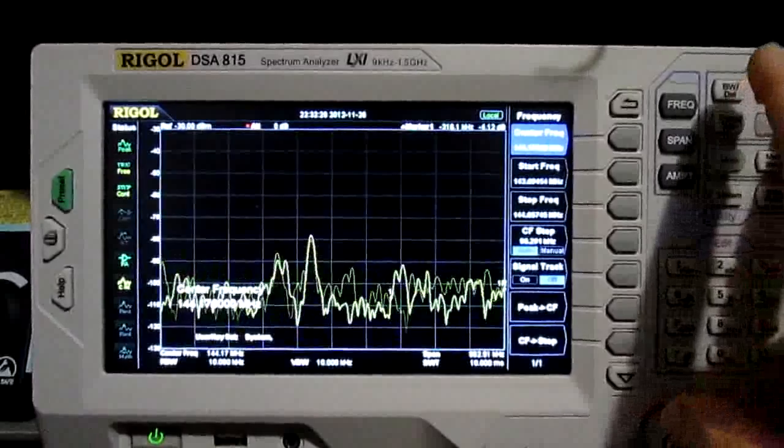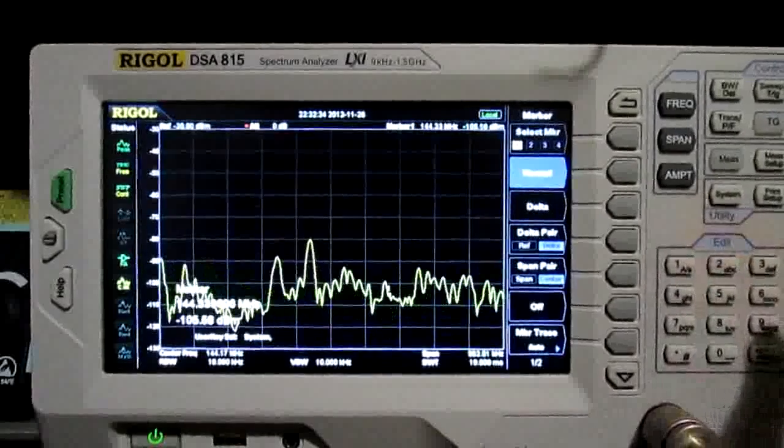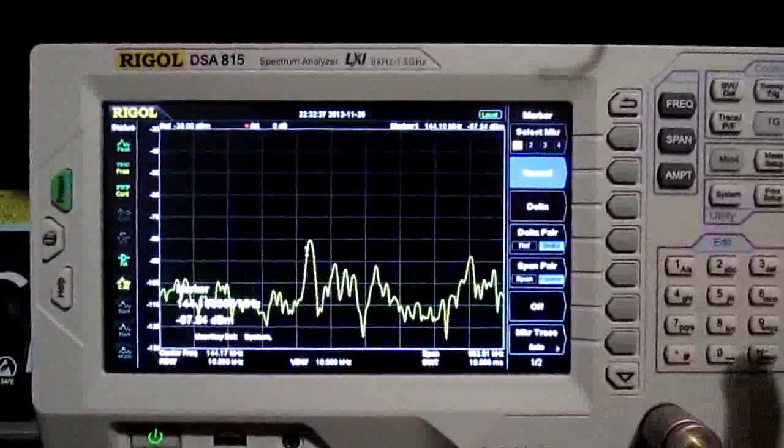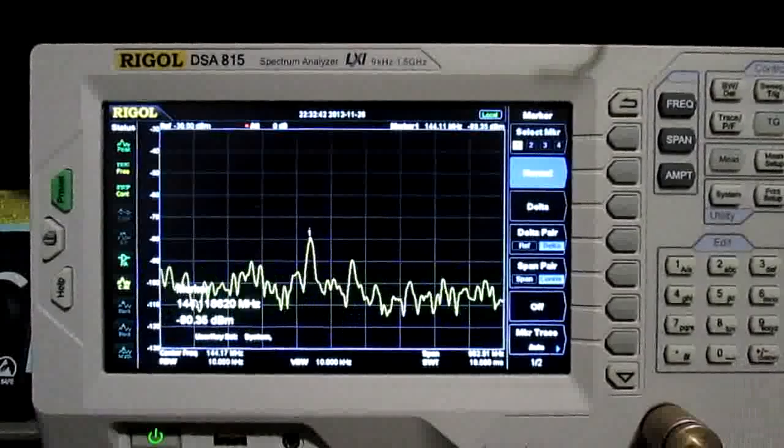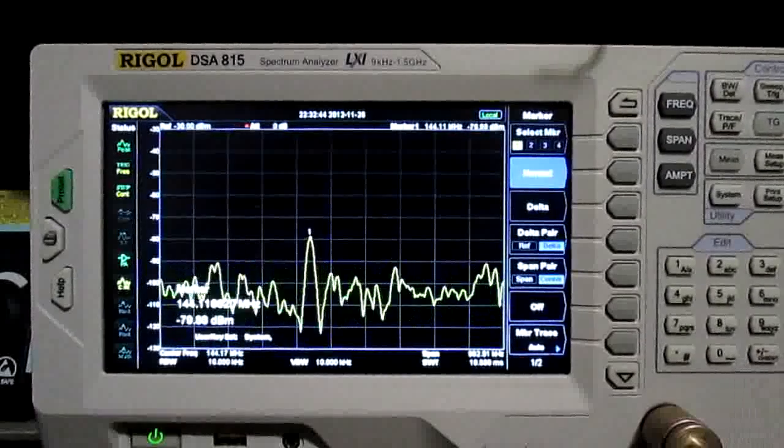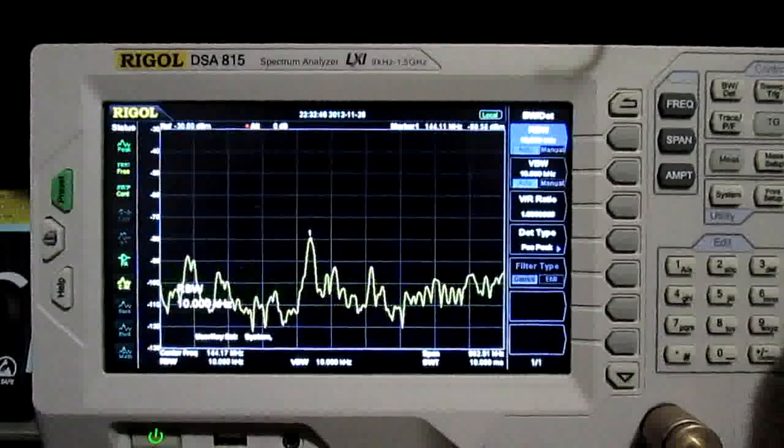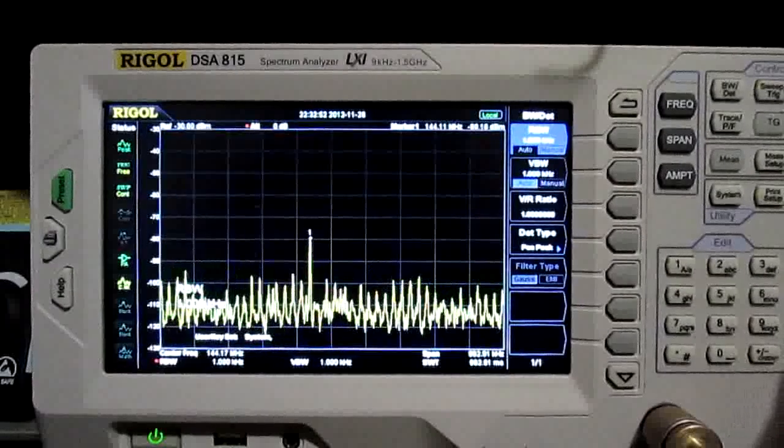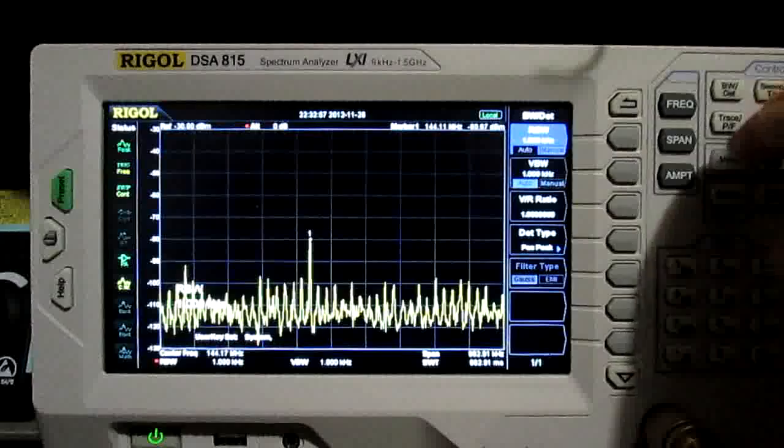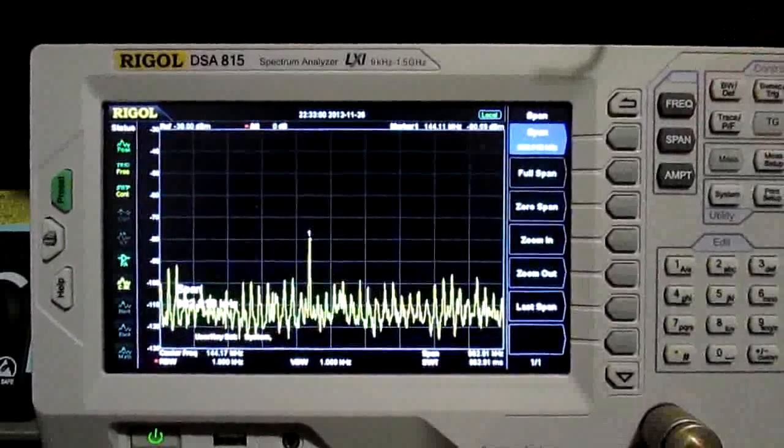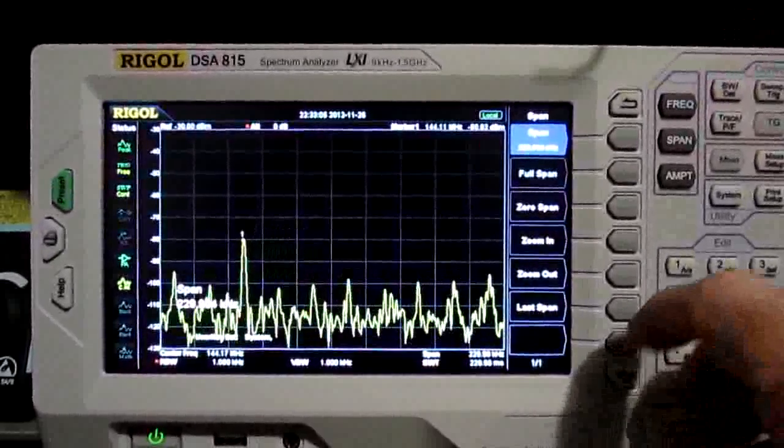So we could do marker, rather. Normal. One. There it is. We'll get that up on that peak there. So it's like 144.116 it says. Let me try to see if I can narrow that down. We'll turn the resolution bandwidth and the video bandwidth down. And I think I'll change the span a little more and lower it. Look at that signal just a little bit better.